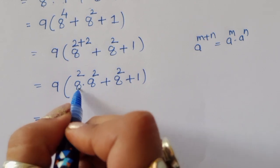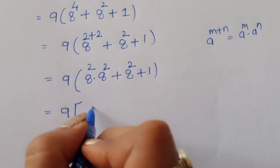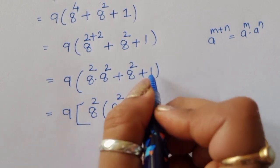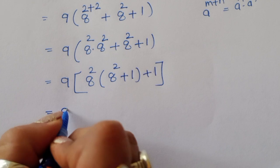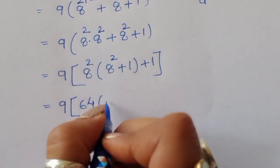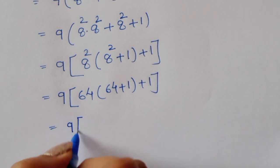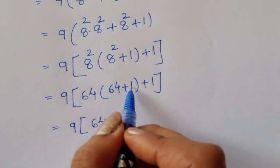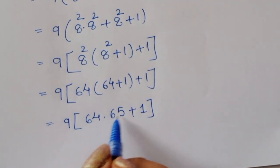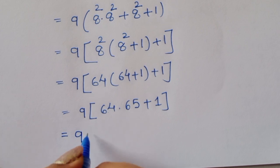Now, 8 power 2 times 8 power 2 plus 8 power 2 — we take 8 power 2 as common: 8 power 2 times (8 power 2 plus 1) plus 1. So we get 9 times (8 power 2 times (8 power 2 plus 1) plus 1). Now 8 power 2 is 64, so this becomes 9 times (64 times (64 plus 1) plus 1), which is 9 times (64 times 65 plus 1).